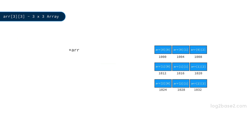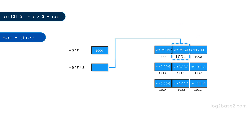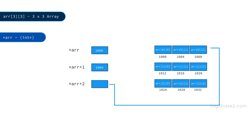Let us understand about *ARR. *ARR will point to the first element of the 2D array, and it is a pointer of type int* as it is a pointer to a single integer element. So if we write *ARR, you will get the address of the first element of the 2D array, which is 1000. As *ARR is a single element pointer, moving *ARR by one position points to the next element. So *ARR + 1 will be the address of the next element, which is 1004. Similarly, *ARR + 2 will be the address of the next element, i.e. 1008.